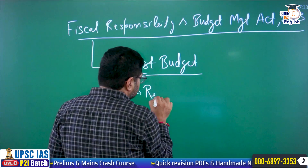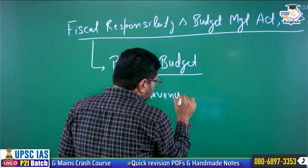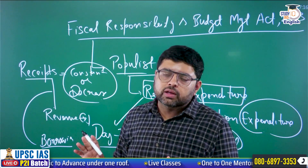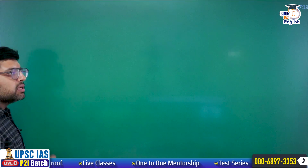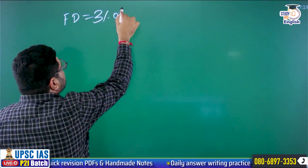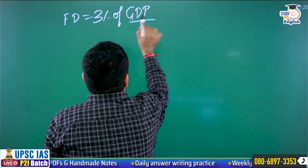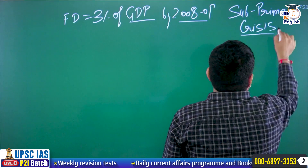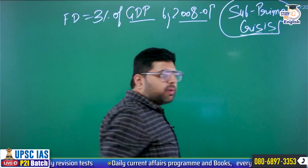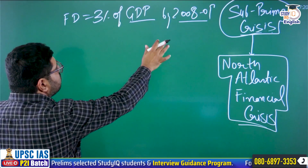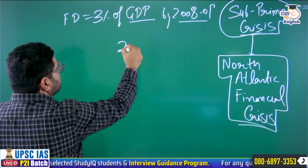Hello students, so today we are going to talk about the FRBM Act. FRBM Act was introduced in 2003 and it stands for Fiscal Responsibility and Budget Management Act 2003. It was started to be implemented from 2004. This act is important for both prelims and mains, so it is very important to remember the features. There are 6 major salient features of this act.